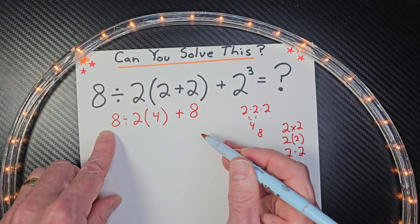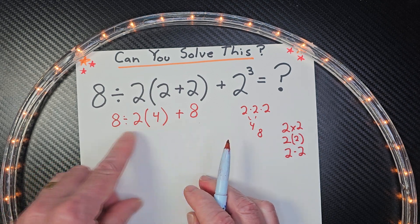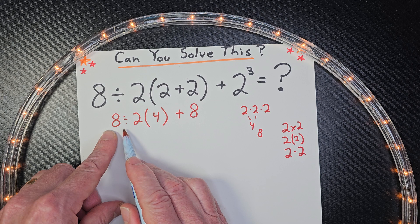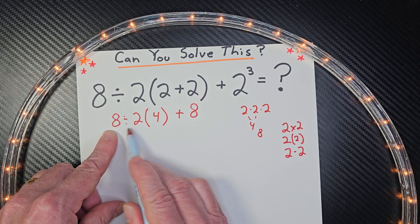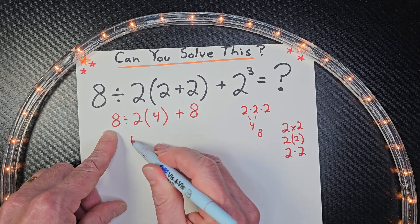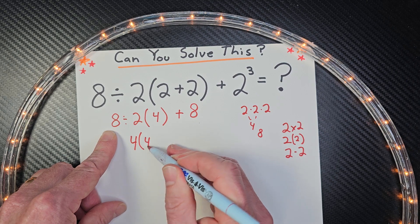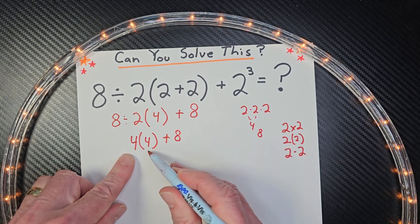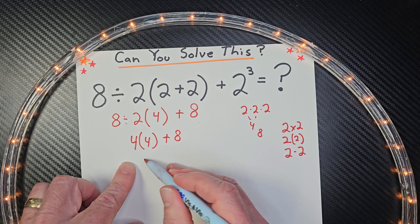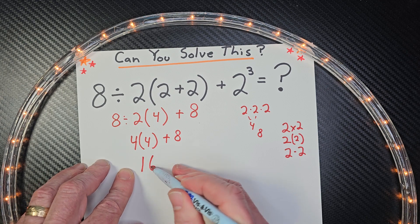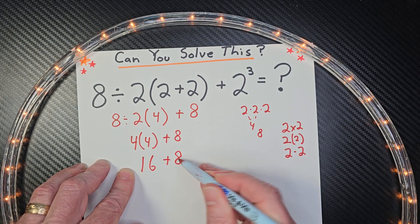And now I'm working from left to right again, and I'm going to do the division. So 8 divided by 2 is 4 times 4 plus 8. And 4 times 4 is, you got it, 16 plus 8.